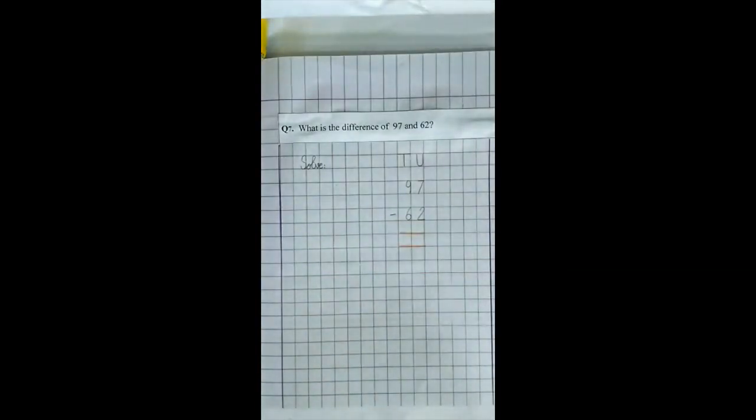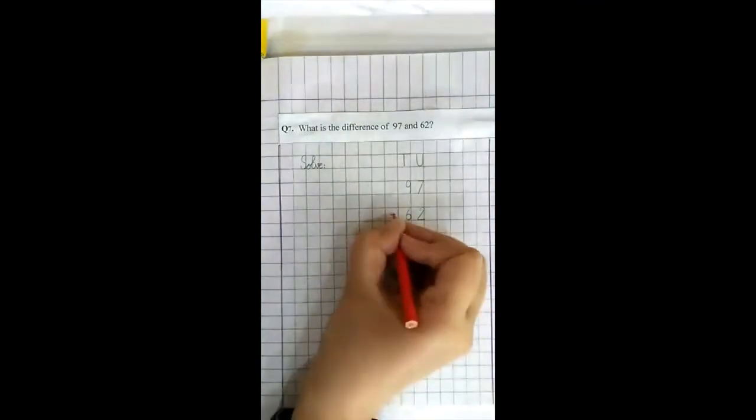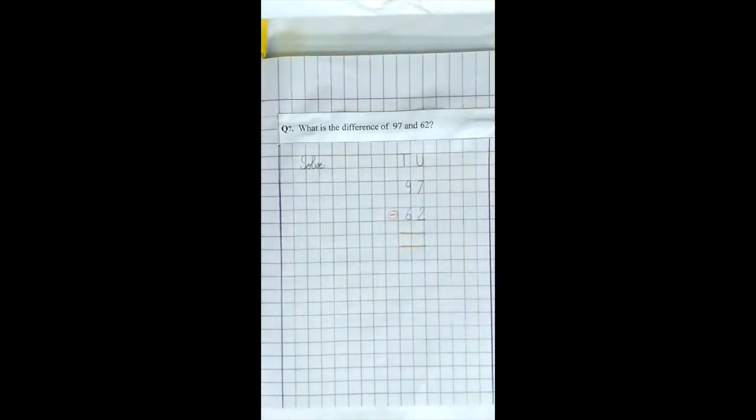First of all, circle the sign of subtraction. ہم minus کا sign کو circle کریں گے. Make an arrow.